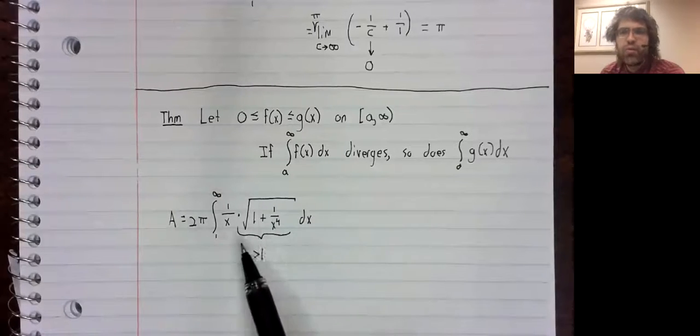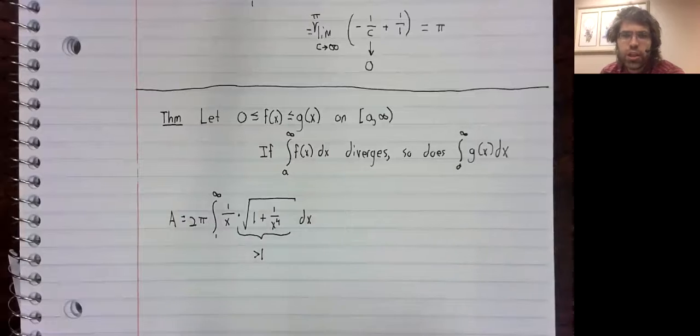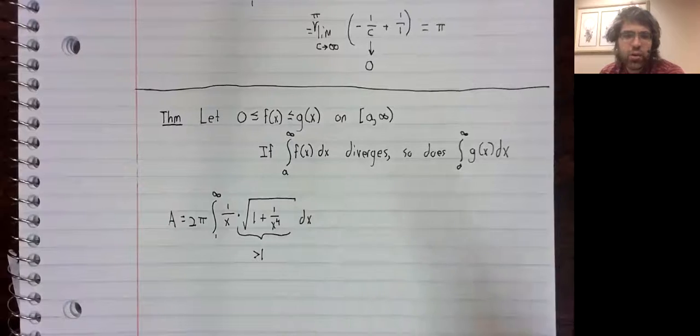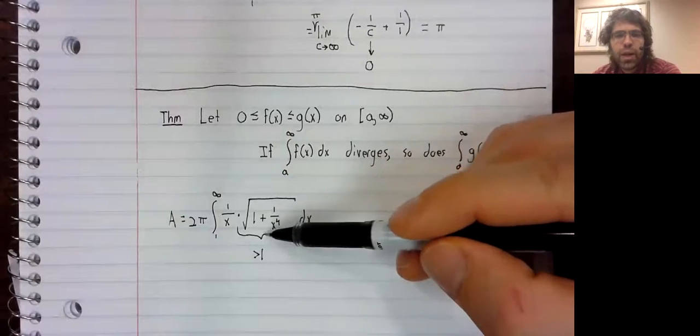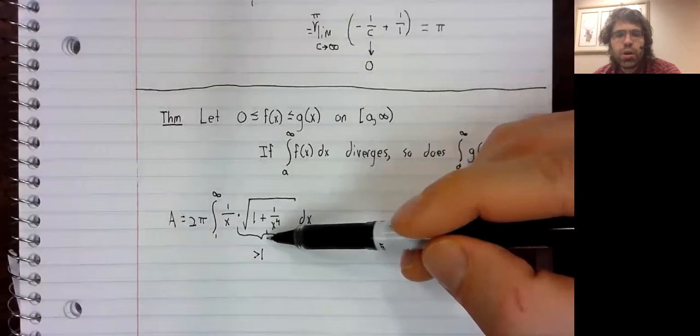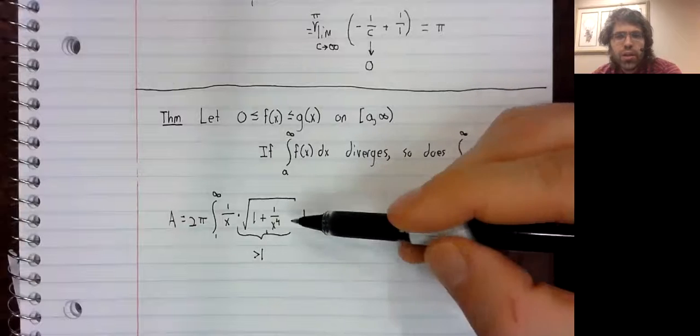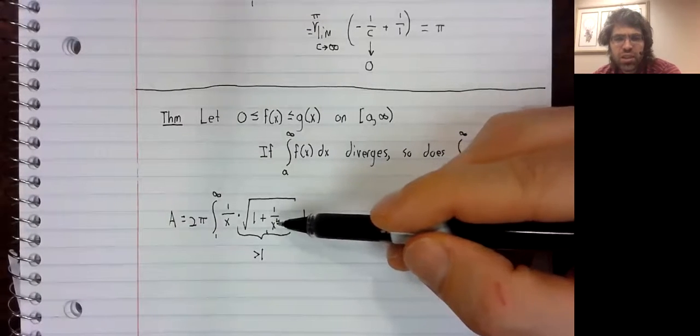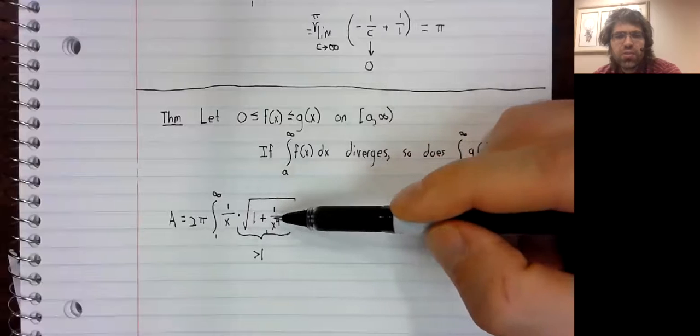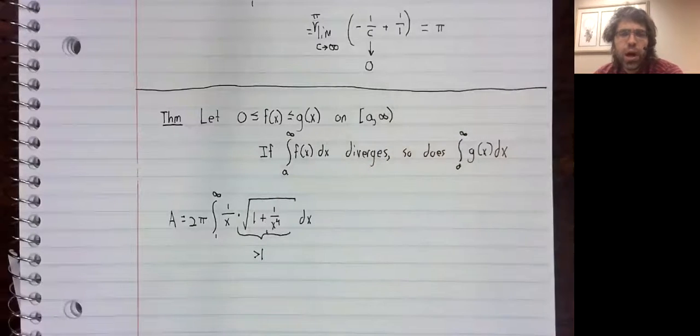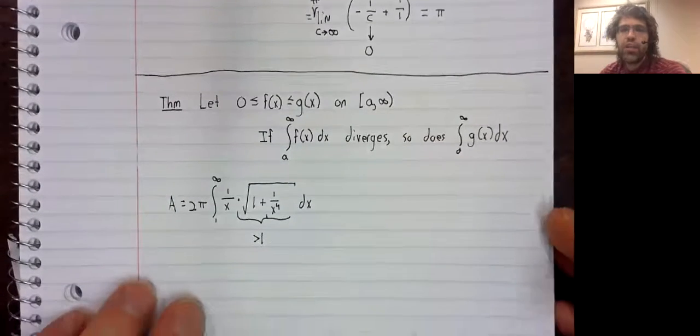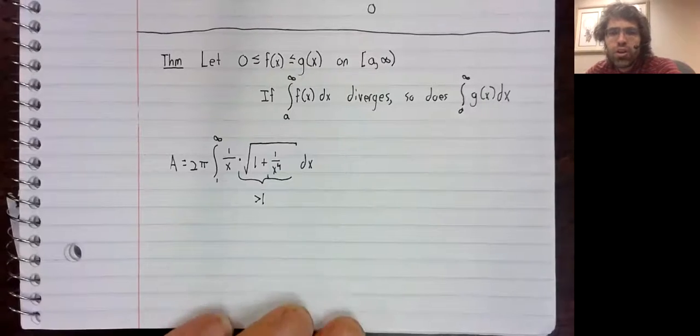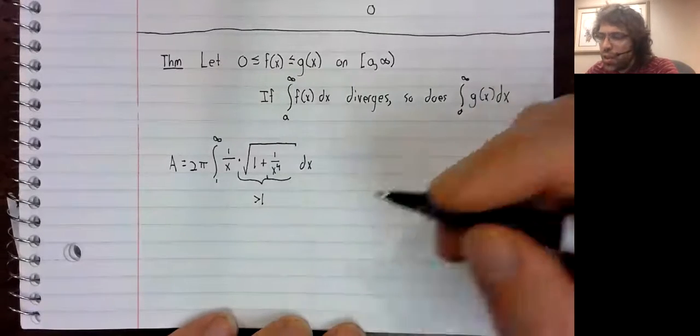Here is the formula for the surface area. I've gone ahead and taken the derivative and squared it and everything. And I make the observation that this square root is bigger than one, because one over x to the fourth is positive. So one plus this is greater than one, and the square root of something that's greater than one is greater than one.